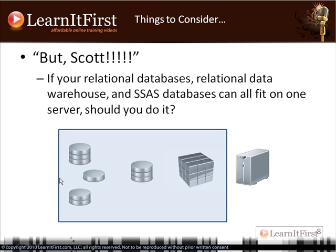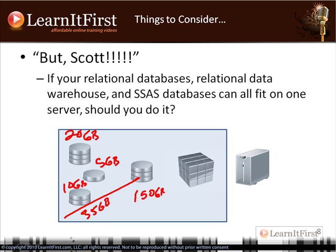What if you can fit all of these on one server? If you're dealing with small databases — say 20, 5, and 10 gigabytes on the relational side, 150 gigs for the relational OLAP, and a small 3-gigabyte cube — you might be able to fit everything on one machine with a SAN. But just because you can doesn't mean you should. If you can make it all one machine, you only need one license.